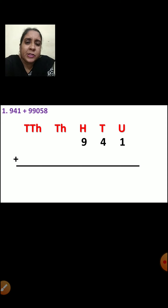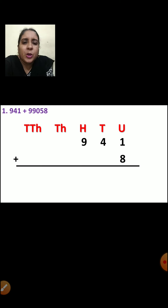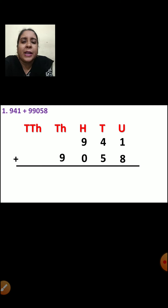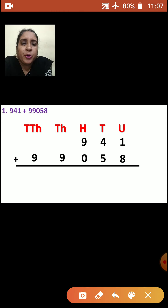Now let us see the next number. That is a 5-digit number. How to arrange it? We will start from 8. Now 8 will come in units place. 5 will come in tens place. 0 will come in hundreds place. 9 will come in ten-thousands place.